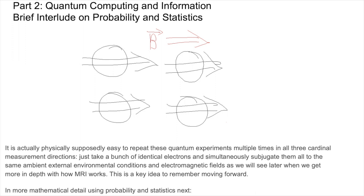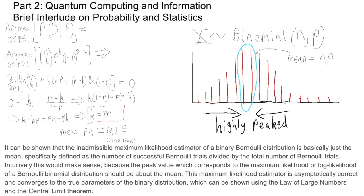In more mathematical detail using probability and statistics next, it can be shown that the admissible maximum likelihood estimator of a binary Bernoulli distribution is basically just the mean, specifically defined as the number of successful Bernoulli trials divided by the total number of Bernoulli trials. Intuitively this would make sense because the peak value, which corresponds to the maximum likelihood or log likelihood of a Bernoulli binomial distribution, should be about the mean. This maximum likelihood estimator is asymptotically correct and converges to the true parameters of the binary distribution, which can be shown using the law of large numbers and the central limit theorem.